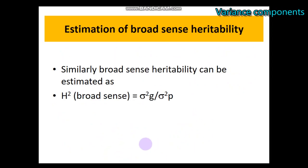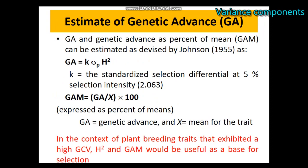Coming to estimating heritability in the broad sense, it is calculated as the ratio of genotypic variance to phenotypic variance. Then, genetic advance is a product of the selection intensity times the broad sense heritability. At 5% selection intensity, the value is 2.063. So genetic advance is estimated as heritability times the selection intensity. Genetic advance expressed as a percent of mean is the ratio of genetic advance to the trait mean times 100%.